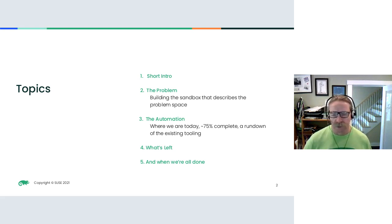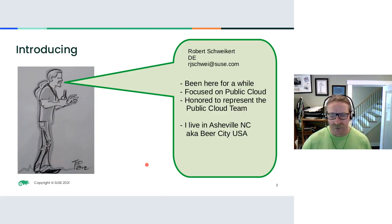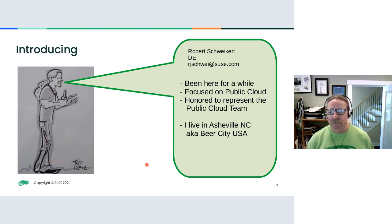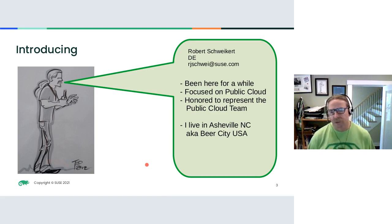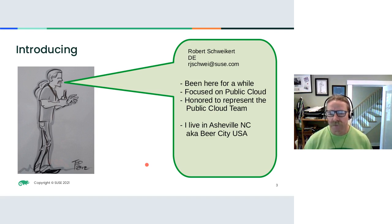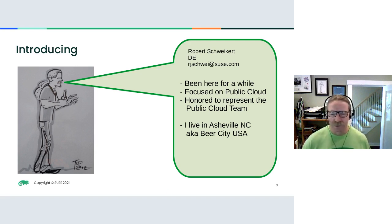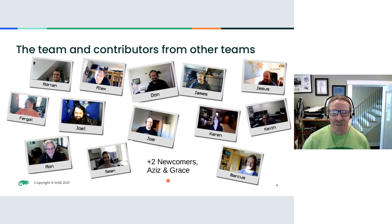This is a lot of content so I don't really want to interrupt — I will definitely run out of time. Something about me: I'm Robert Schreikert, I'm a distinguished engineer at SUSE. I've been here for a while, focused on public cloud for roughly about 10 years. I'm very honored to be able to represent the public cloud team. I live in Asheville, North Carolina, also known as Beer City, and you will notice the beer theme coming into play here later.